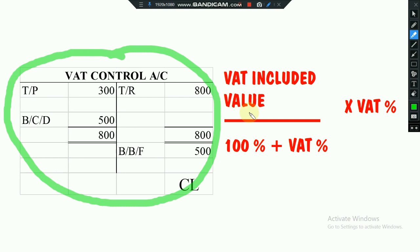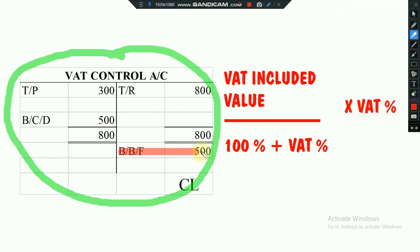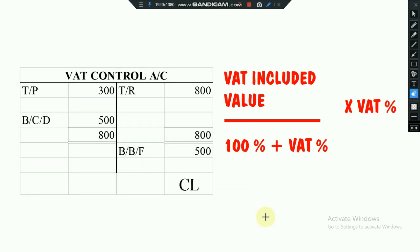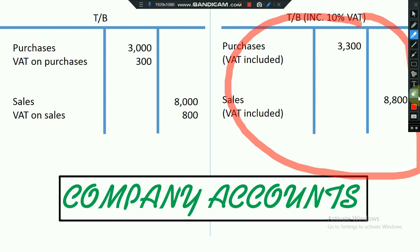VAT on purchases you put on the debit side; VAT on sales you put on the credit side. Once you balance the account, you get the balance carried down and balance brought forward — for example, 500. If the BBF came on the credit side, that means you record that 500 in current liabilities as VAT Payable. If the BBF is on the debit side, it is a current asset and you record it in current assets in the SOFP as VAT Receivable.